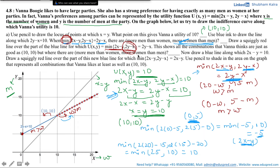This shows all the combinations that Vanna thinks are just as good as (10, 10) but where there are more women than men. Next, draw a blue line along which 2x - y = 10. That upward-sloping line is your line 2x - y = 10.